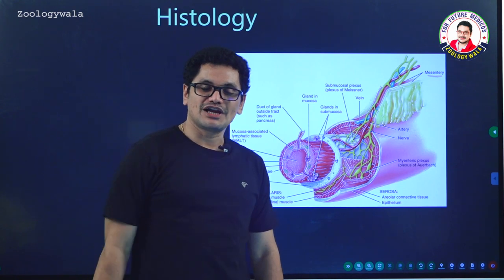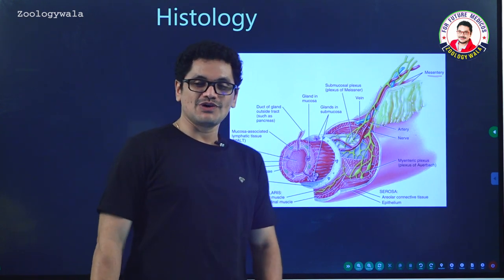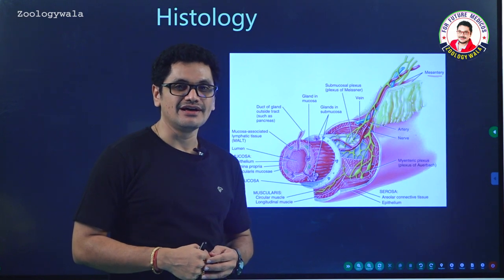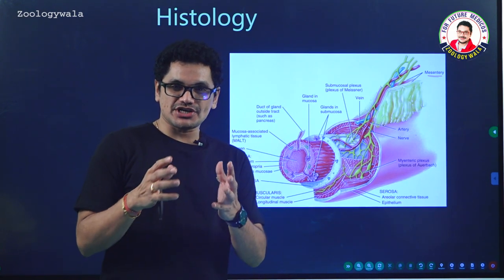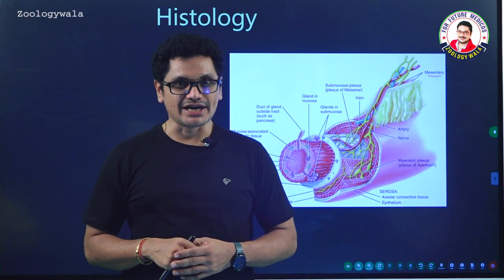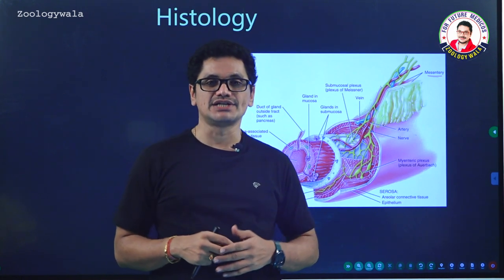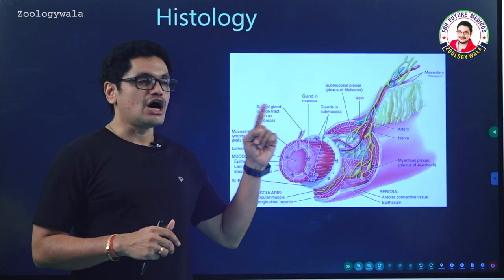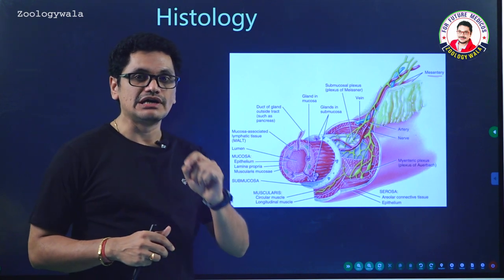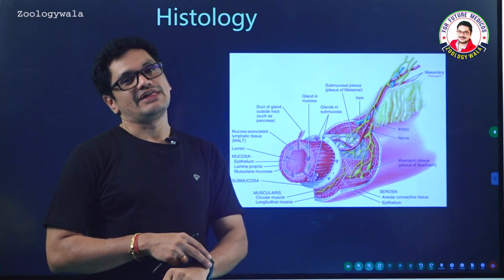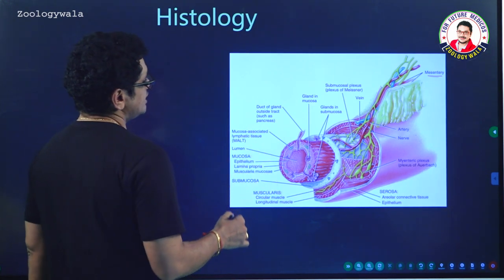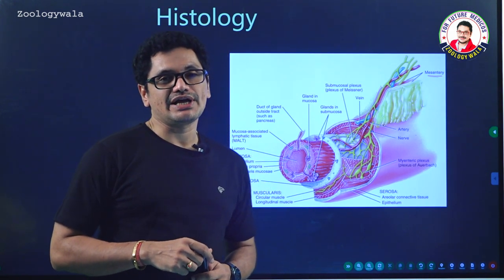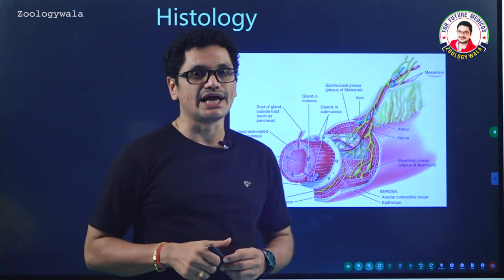Welcome students to the class. In the last class we covered the structure of the alimentary canal starting from mouth to the anus, and now I am going to explain the histology of the alimentary canal. The wall of the alimentary canal contains four layers.